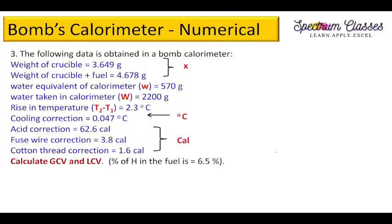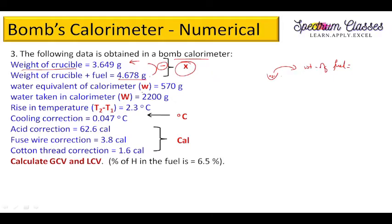The next question uses the bomb calorimeter with additional correction data. Weight of the crucible is given, and weight of crucible plus fuel is given. Weight of fuel (x) = weight of crucible plus fuel minus weight of crucible. Water equivalent (small w), water taken (capital W), rise in temperature T2−T1, cooling correction, acid correction, fuse wire correction, cotton thread correction, and percentage of hydrogen are all provided.